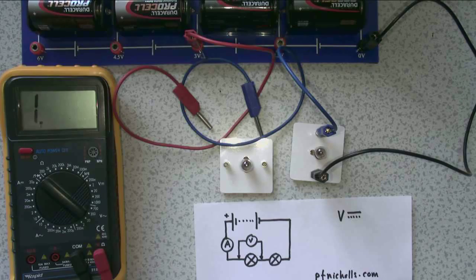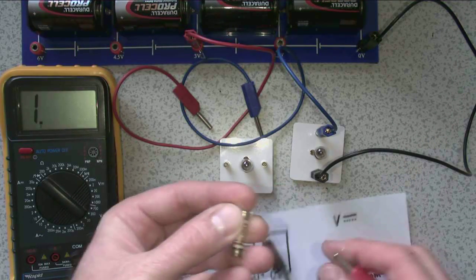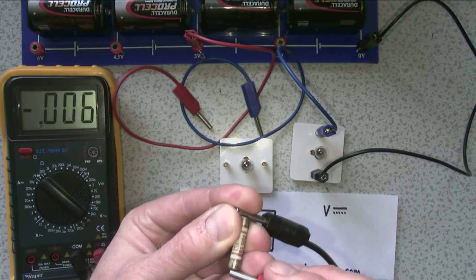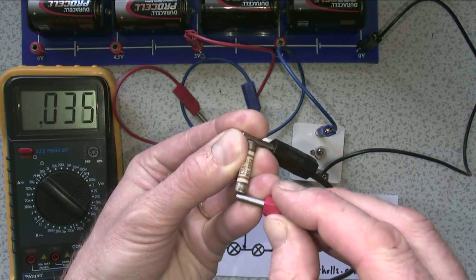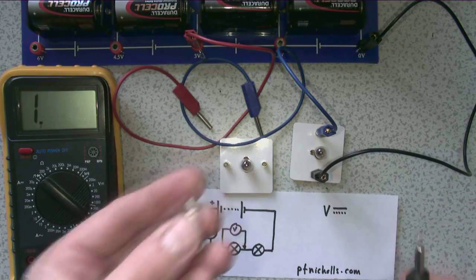This is useful for testing things like fuses out of the household plugs. So if I put one wire each side, oops, dropped it. And there you go. So now I can tell that's making a continuous connection, so that's a good fuse. So I can put that back in my plug with some confidence.